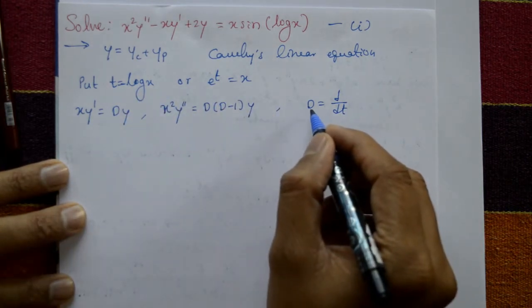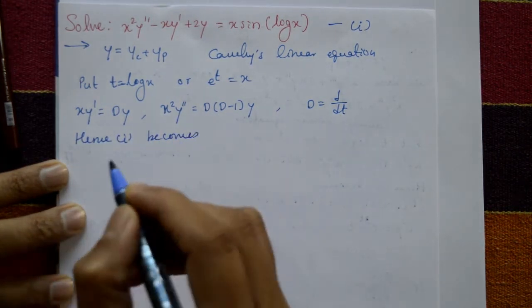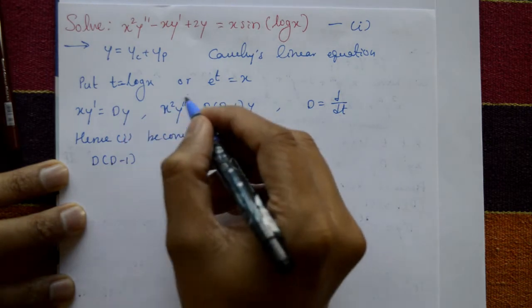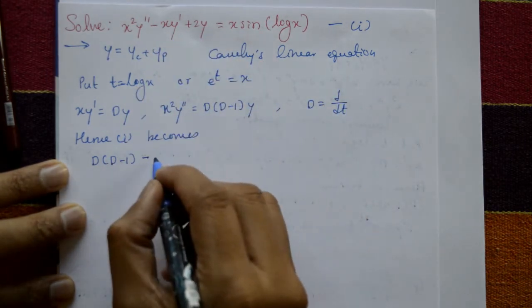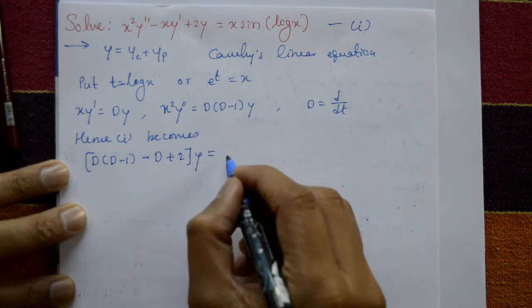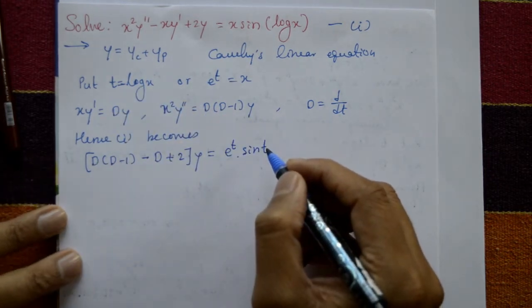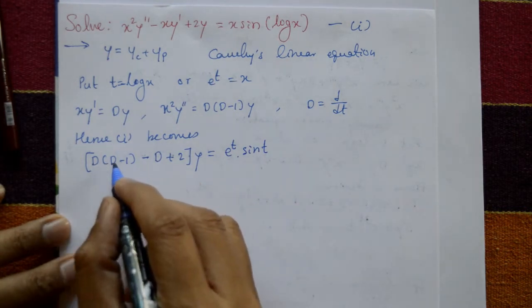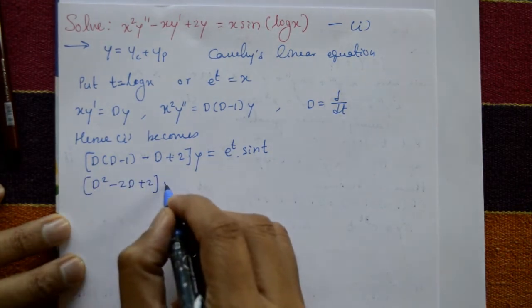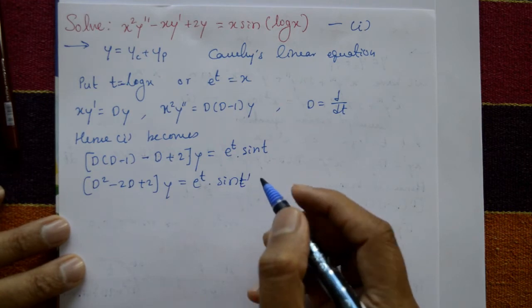Using these results in equation number 1, equation 1 becomes: x²y'' is D(D−1)y, minus xy' is −Dy, plus 2y equals x = e^t, and sin(log x) = sin t. Opening the bracket: D² − 2D + 2 multiplied by y equals e^t · sin t.